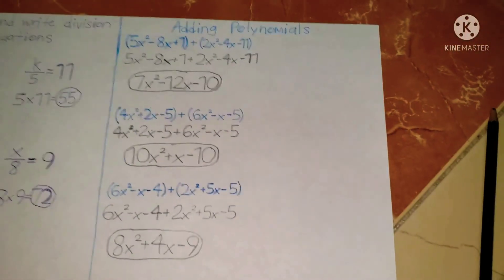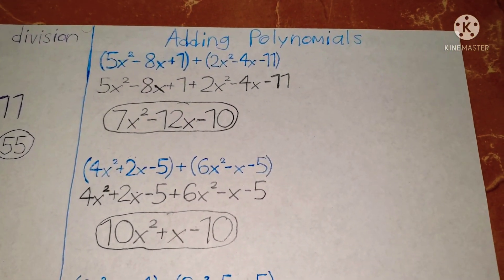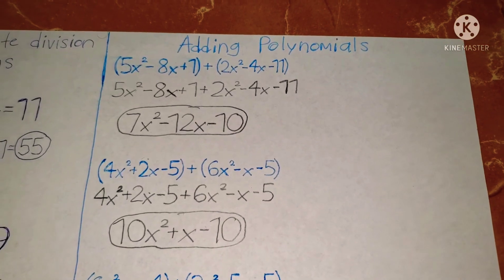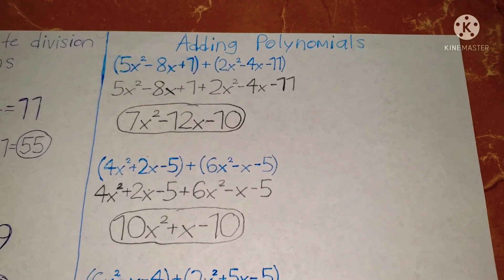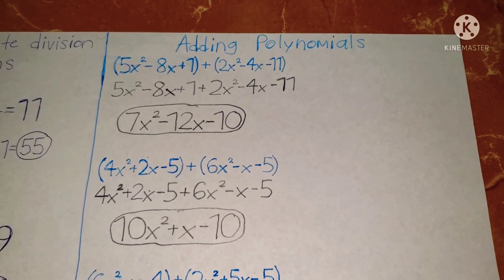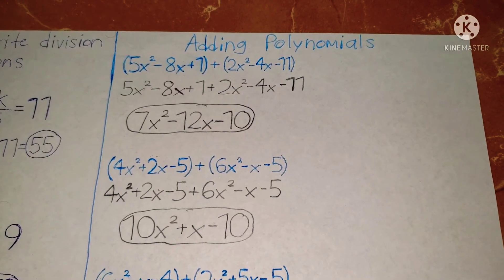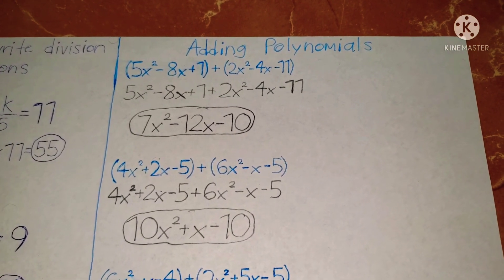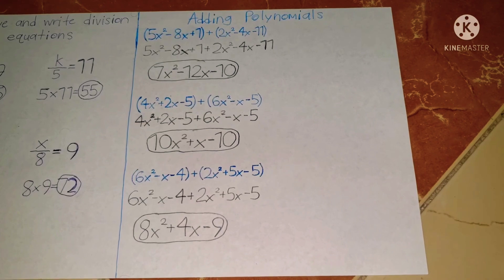There you go guys. Now let me briefly explain how you solve adding polynomials. When you have parentheses with a positive sign, all you have to do is remove the parentheses — the numbers and signs stay the same. Then you add the terms in order: x squared terms first, then x terms, then the constant. Add or subtract them, and that's it — you'll get your final answer. This is how you solve adding polynomials.